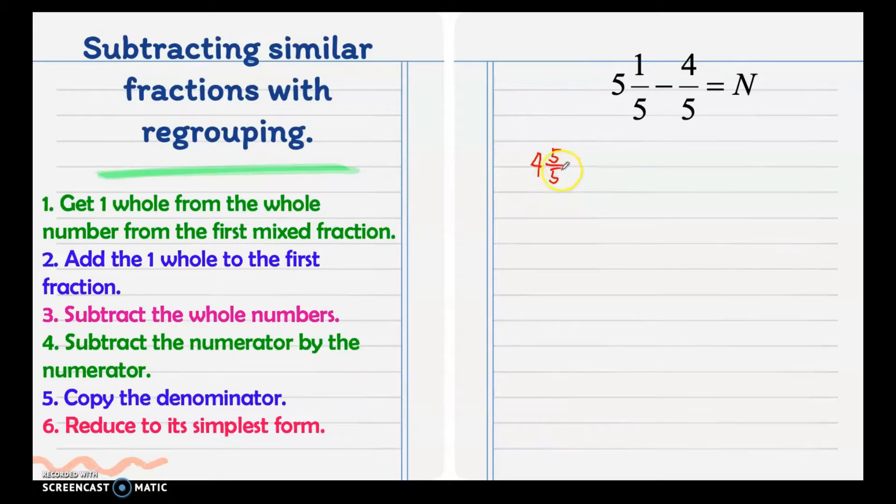I use 5 over 5 instead of 6 over 6, 7 over 7 and so on as this one whole fraction, so that I can easily add it to 1/5. The second step is add the one whole to the first fraction. We have 4 and 5/5 which is equal to 5, added to 1/5.